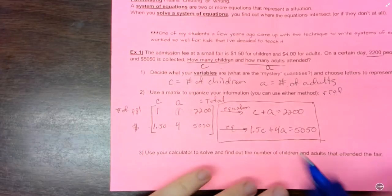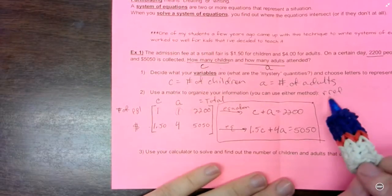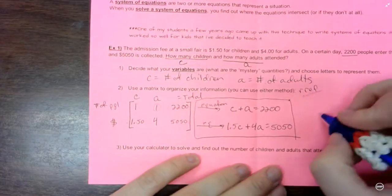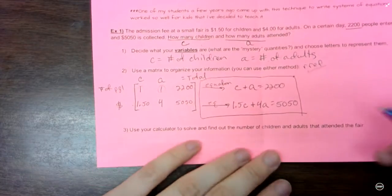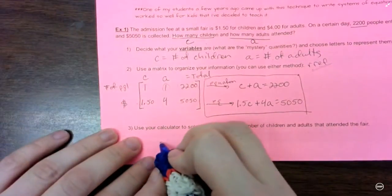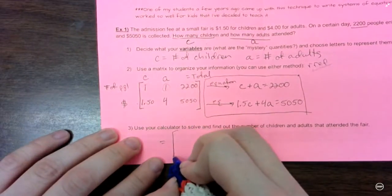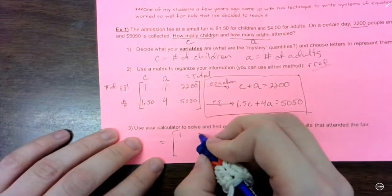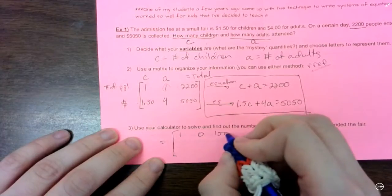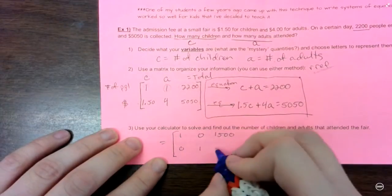Okay, so like I said, I prefer the reduced row echelon form method, so that's what I used in my example. And when you enter that in your calculator, you will get something that looks like this. So 1, 0, 1500, and 0, 1, 700.